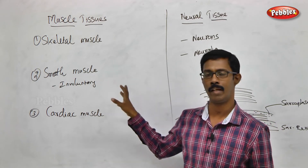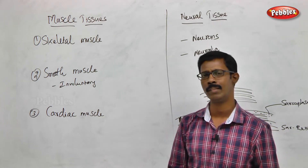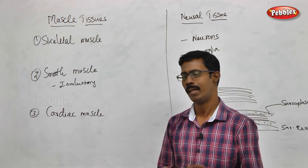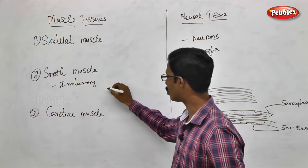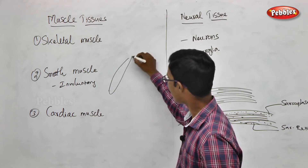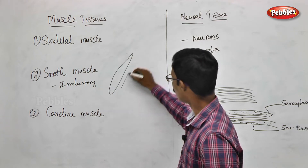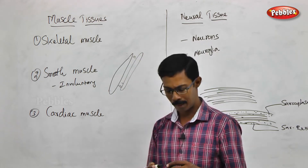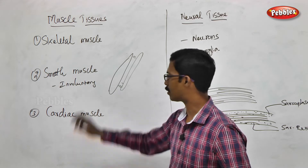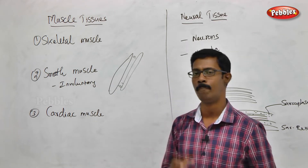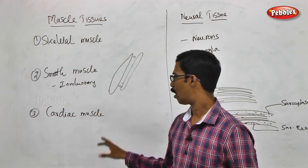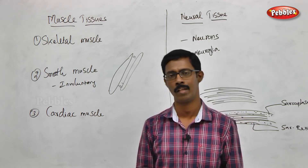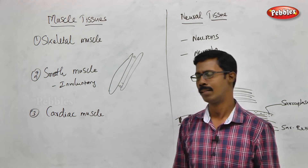Smooth muscles have a striated appearance that is less prominent. These cells are tapered in shape. One cell connects to another cell through cell junctions. These are smooth muscles. Cardiac muscles share some features with skeletal muscles but are distinct from smooth muscles.